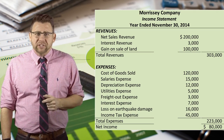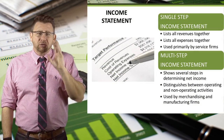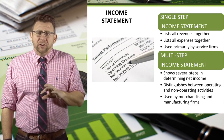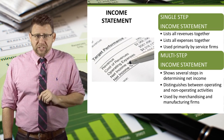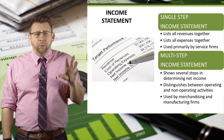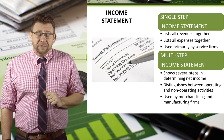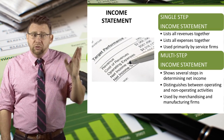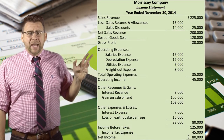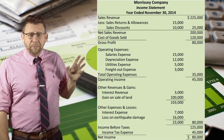A multi-step income statement still lists revenues and expenses, but it separates operating revenues and expenses from non-operating revenues and expenses, and divides the accounts into important subtotals that highlight areas of importance for investors and creditors. The subtotals include gross profit and operating income.